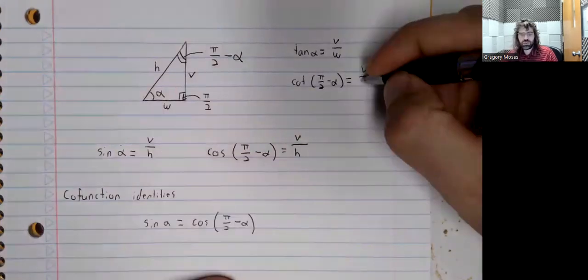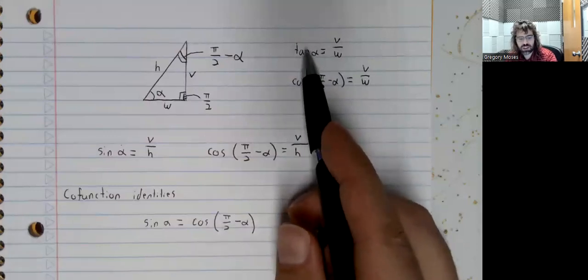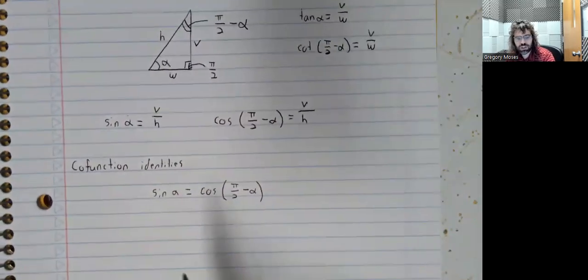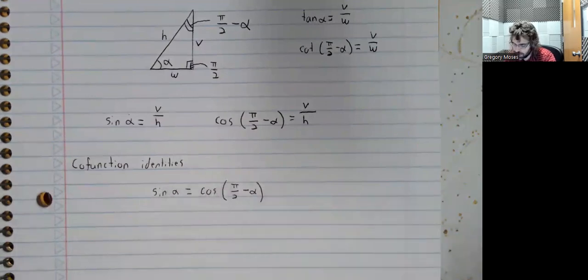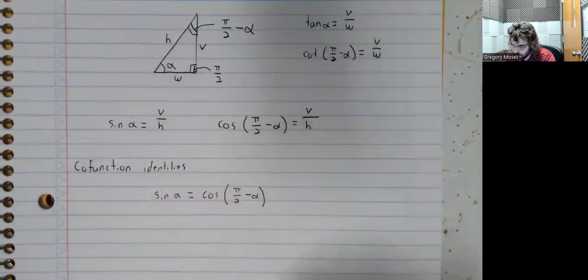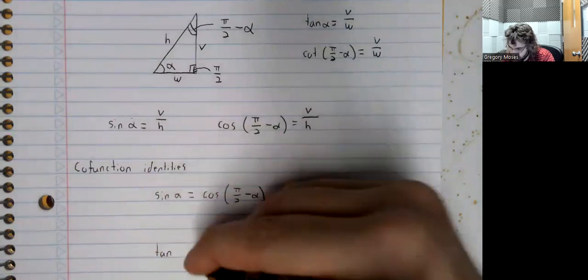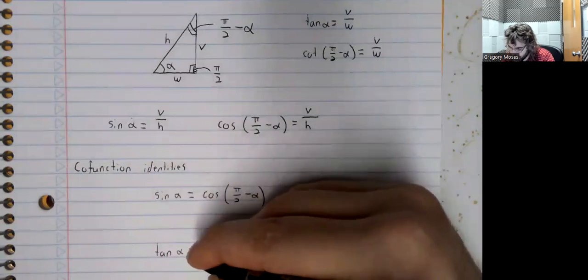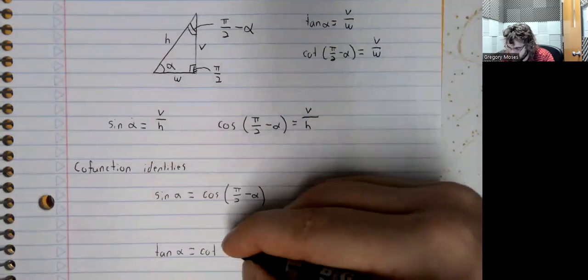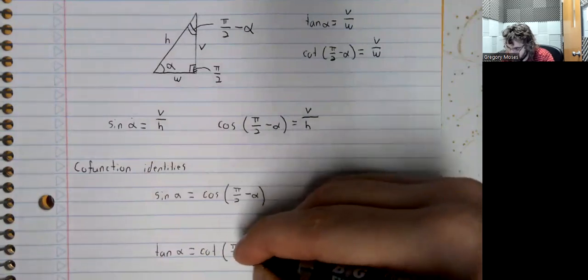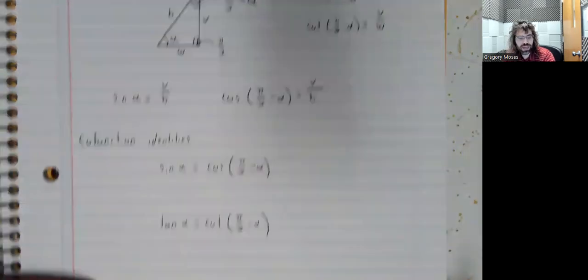And you see, again, this relationship between the tangent and the cotangent. A very similar relationship to what you saw between the sine and the cosine. That the tangent of alpha is the same as the cotangent of pi over 2 minus alpha.